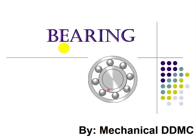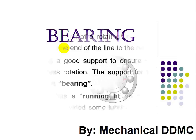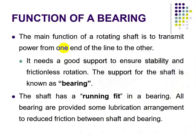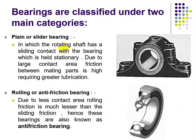At the end of the video you will also understand the advantages and disadvantages of bearing. The main function of the operating shaft is to transmit power from one end to another. During the transmitting process the shaft needs support, which is provided by the bearing. The bearing acts as a support for the shaft. The shaft runs inside the bearing, and all bearings are provided with some lubrication arrangement to reduce friction between shaft and bearing.